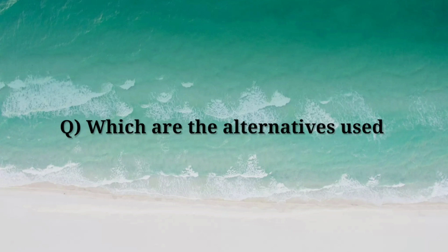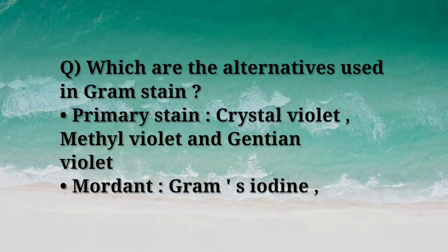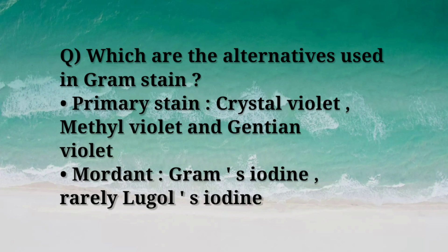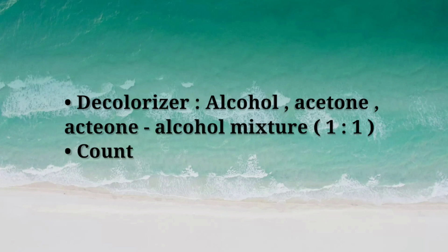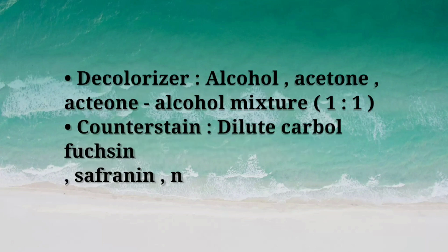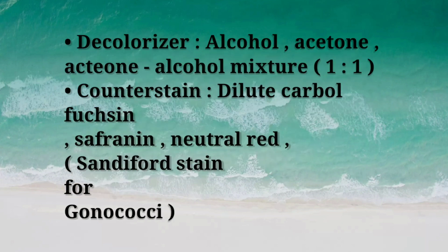Next: what are the alternatives used in gram stain? For primary stain: crystal violet, methyl violet, and gentian violet. For mordant: Gram's iodine, rarely Lugol's iodine. Decolorizer: alcohol, acetone, or acetone-alcohol mixture in the ratio of 1:1. Counter stain: dilute carbolfuchsin, safranine, neutral red, or Sandy Fort's stain for gonococci.